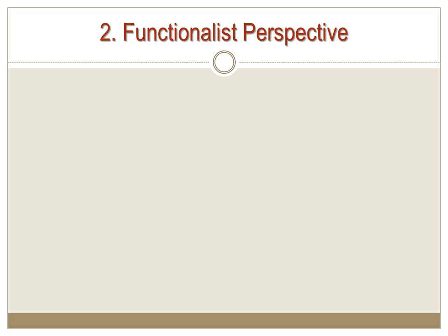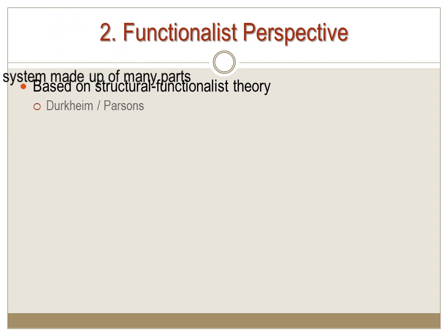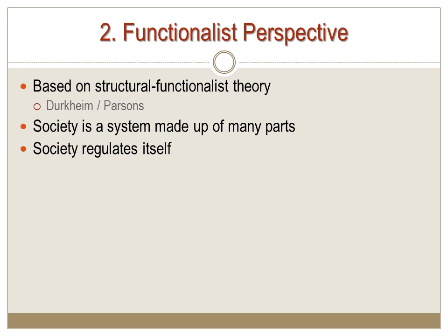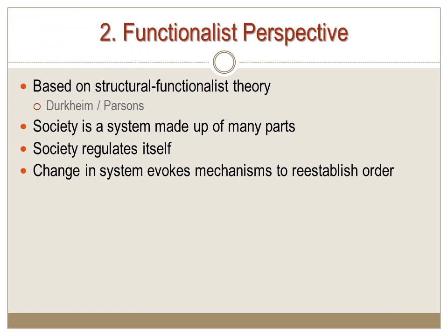The functionalist perspective views society as being cooperative and harmonious. They believe that consensus holds society together. Functionalism interprets social groups as a system made up of many interdependent parts, so if there is a change in one group, it automatically leads to change in every associated group. The whole goal is to maintain or re-establish order — society regulates itself this way and tries to stay in equilibrium.